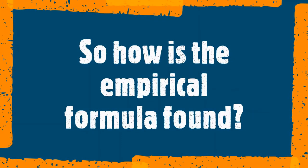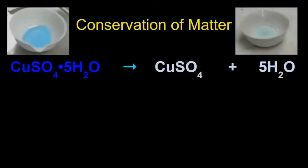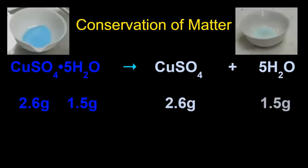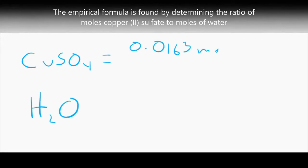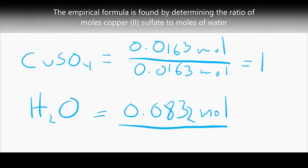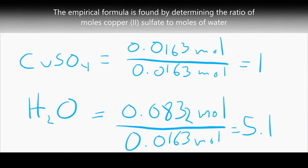To find the empirical formula, we apply conservation of matter and assume that the amount of CuSO4 in the original hydrate equals the mass of CuSO4 remaining after heating, and that the mass of water in the original hydrate equals the mass of water driven off. Dividing the moles of anhydrous copper sulfate and the moles of water by the smaller of the two values gives a whole number ratio. We calculate a ratio of 1 to 5.1, which agrees very well with the known empirical formula for this hydrate, which has a ratio of 1 to 5.